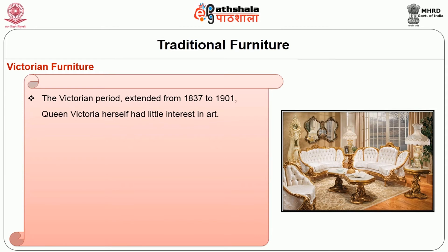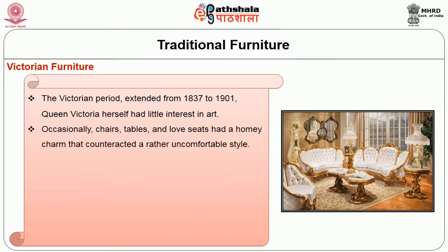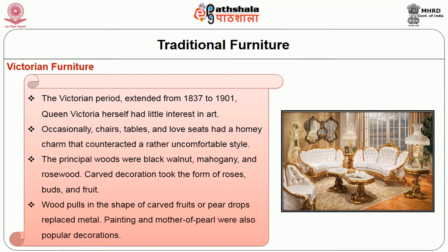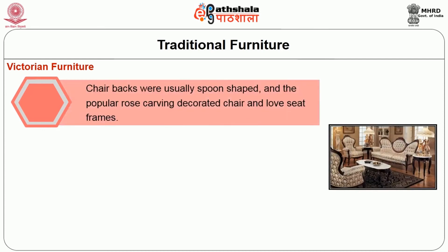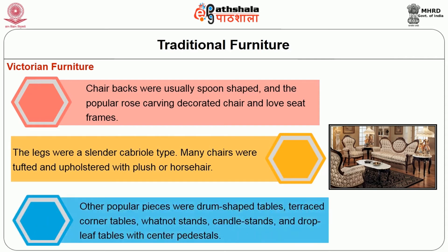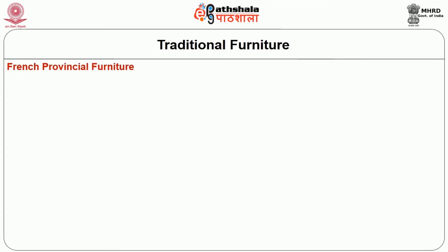Victorian furniture: the Victorian period extended from 1837 to 1901. Queen Victoria herself had little interest in art. Occasionally chairs, tables, and love seats had a homey charm that counteracted a rather uncomfortable style. The principal woods were black walnut, mahogany, and rosewood. Carved decoration took the form of roses, buds, and fruit. Wood pulls in the shape of carved fruits or pear drops replaced metal; painting and mother of pearl were also popular decorations. Chair backs were usually spoon-shaped, and rose carving decorated chair and love seat frames. Legs were the slender cabriole type. Many chairs were tufted and upholstered with plush or horsehair.